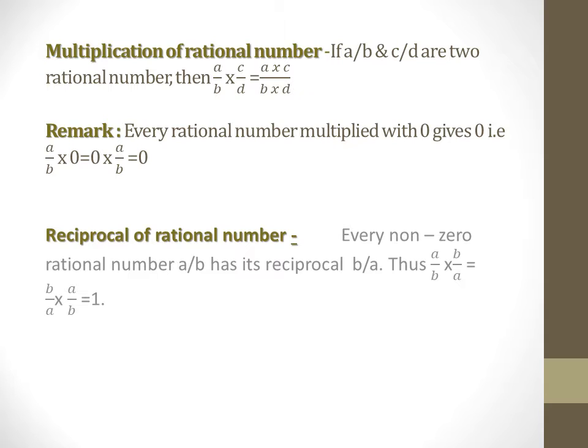Reciprocal of a rational number: every non-zero rational number a/b has its reciprocal b/a. Thus, a/b × b/a = b/a × a/b = 1. It means if a rational number and its reciprocal multiply each other, then the result is 1.